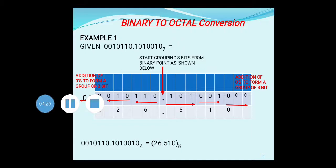For the fractional part, you start grouping from the binary point towards the right, taking 3 bits at a time. When you start grouping: 101 is done, then 001 is done, but only one single zero remains. So you add 2 more zeros to form a complete 3-bit group. Always add zeros if there are not enough bits to form a group of 3.